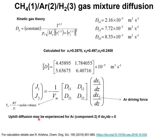Particularly noteworthy is the D21 element, because component 2 is argon. Even if there is no driving force for argon, the off-diagonal element D21 will contribute to the flux of species 2 because D21 is multiplied by the driving force of component 1, and that driving force is large in magnitude. Therefore, we may experience uphill diffusion for argon.